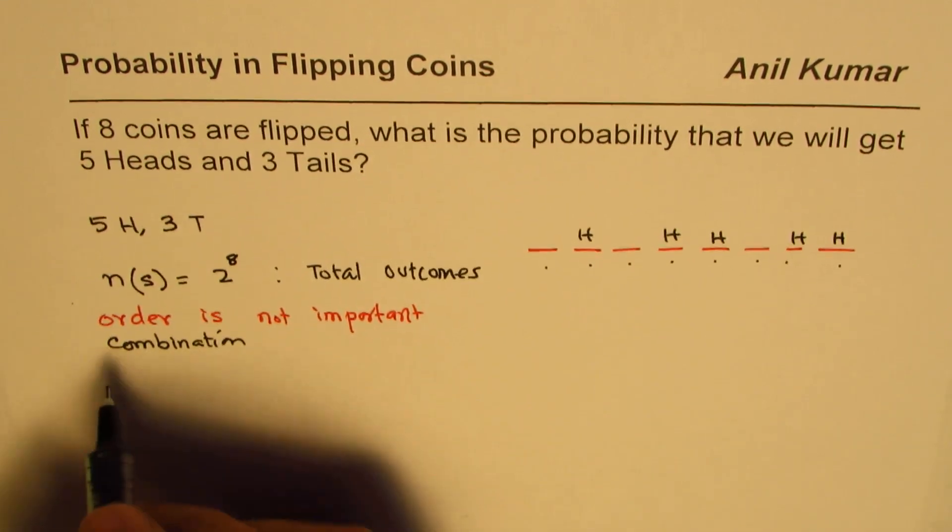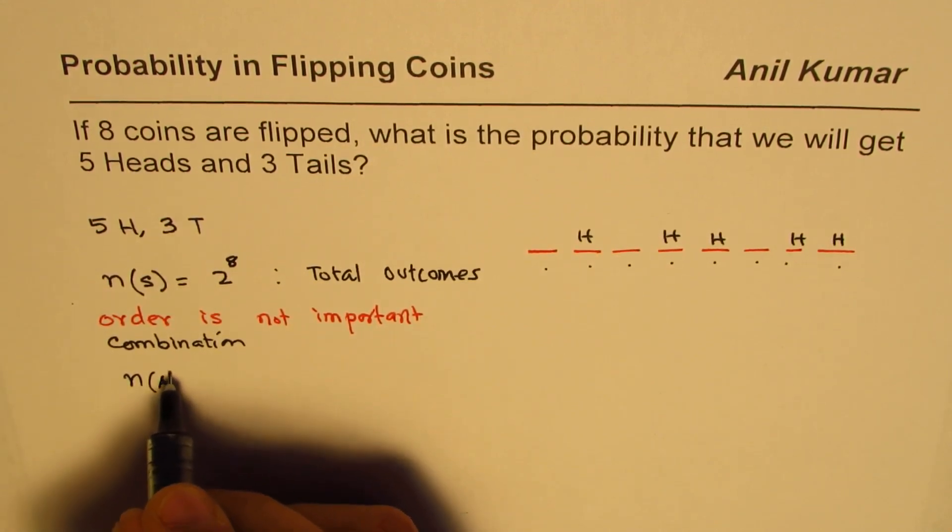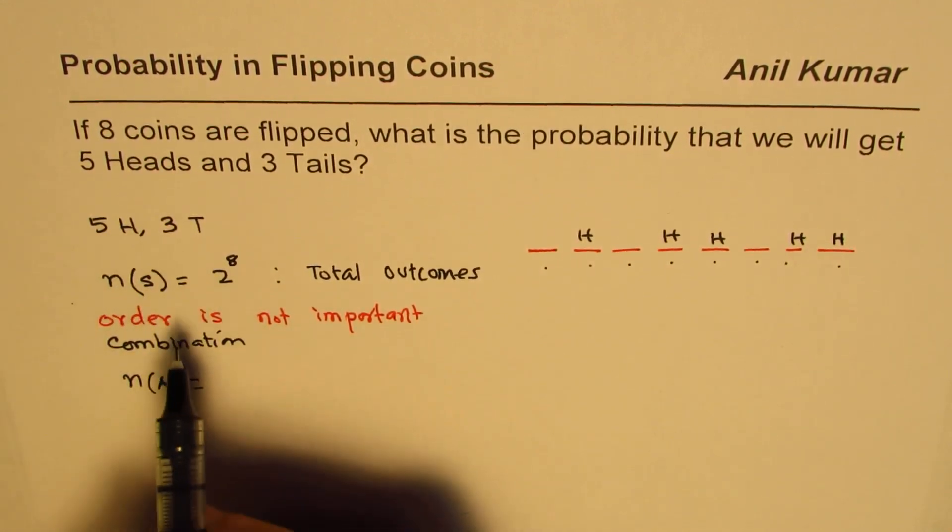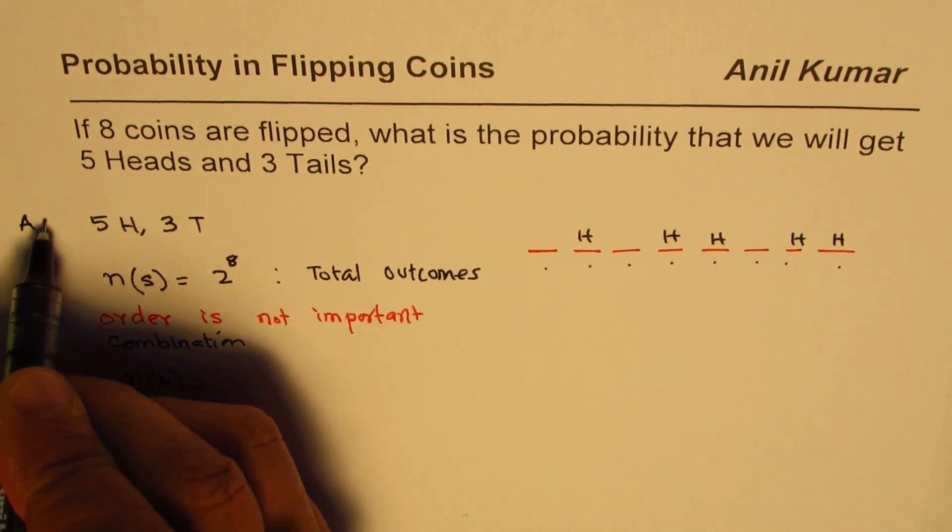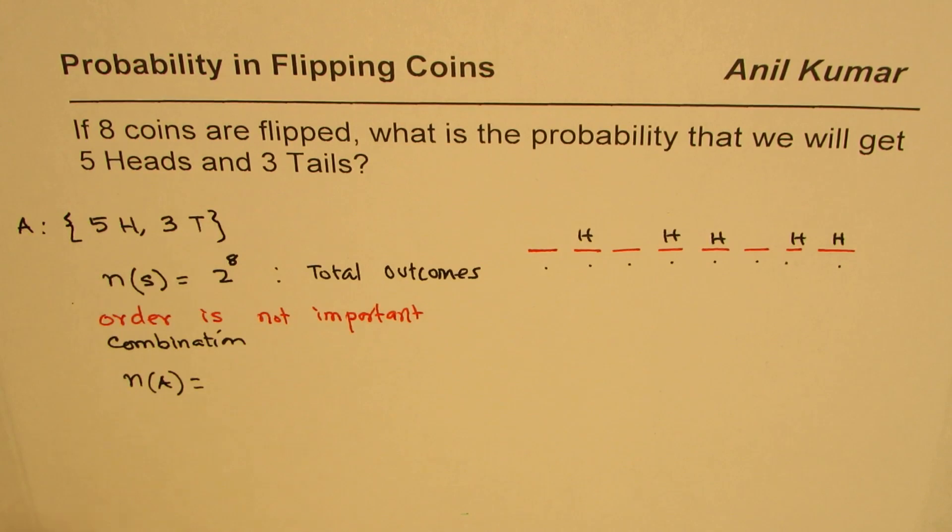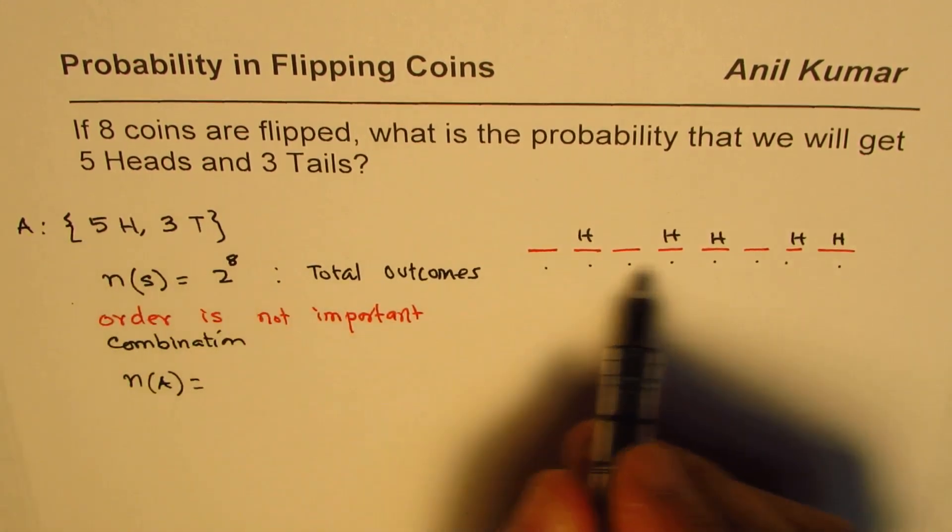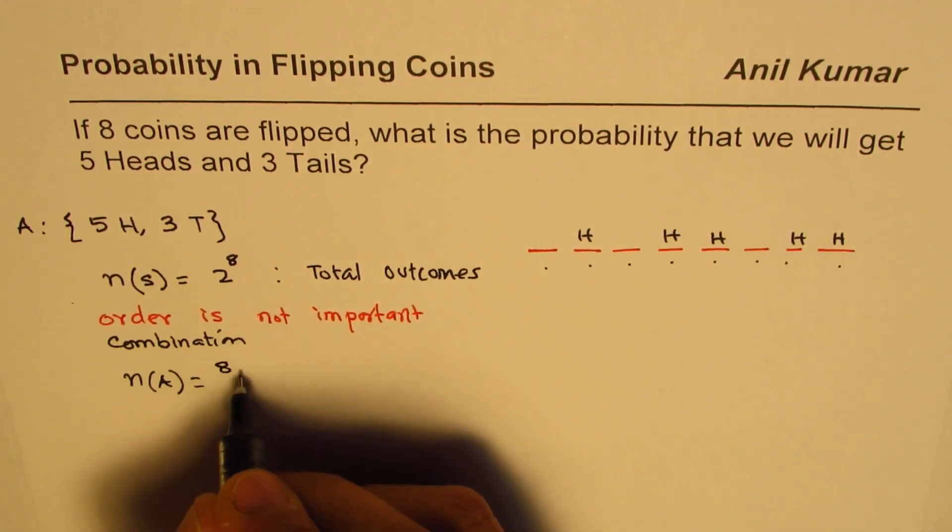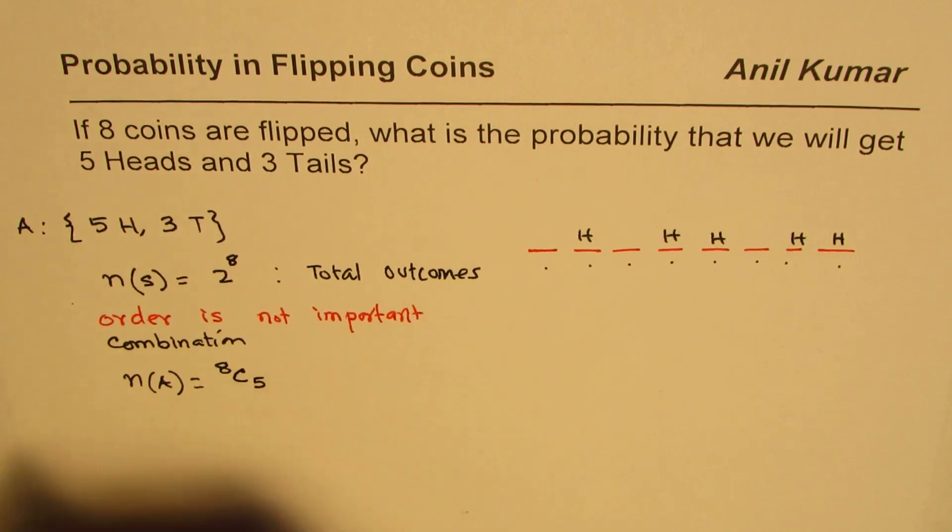So that gives us the favorable outcomes for our event, which is, let's call this event as A, which is 5 heads and 3 tails. So 5 heads out of 8. So it is 8C5. So that is the favorable event.